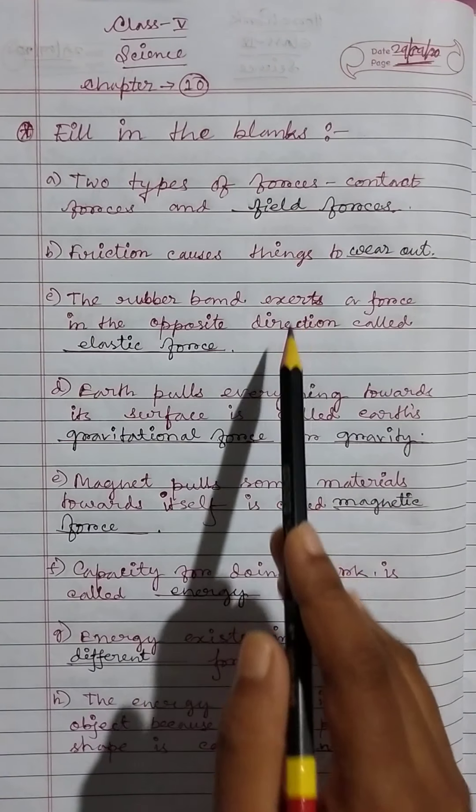A spring returns to its natural length because of elastic force. Gravity is the force that makes things fall on Earth. Kinetic energy is the energy of moving things.